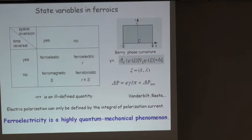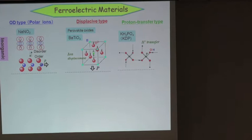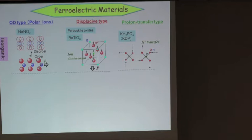I will emphasize some quantum aspects of organic ferroelectrics. Let me start with ferroelectric materials. They may be sorted into three types. One is the order-disorder type — for example, polar ions like sodium NO2. This sodium NO2 is originally polar and shows an order-disorder transition. If the polar units line up, you have spontaneous polarization. It's somewhat classical.